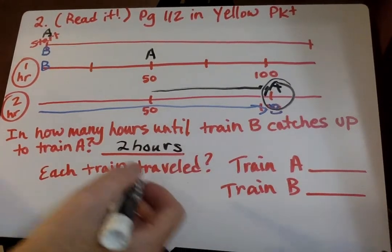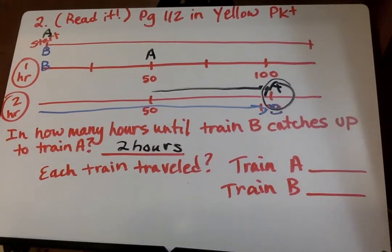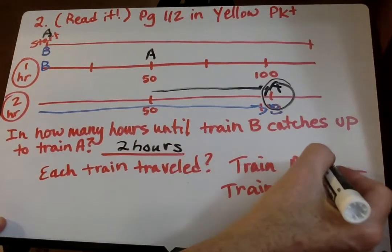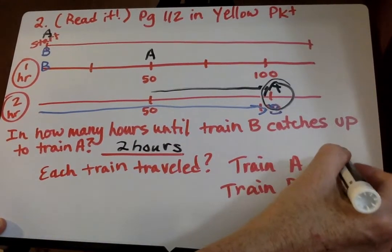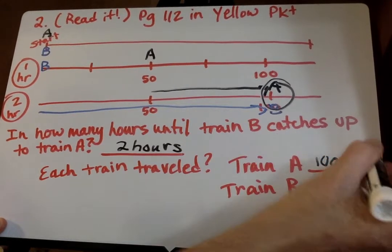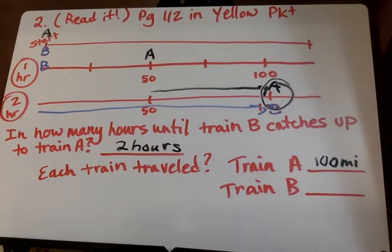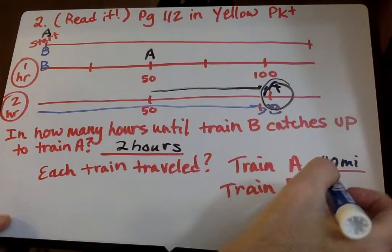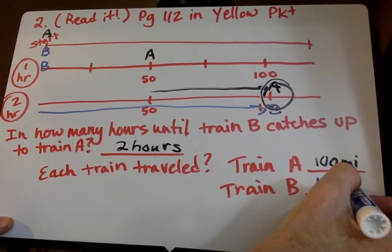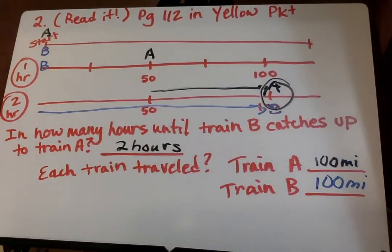How far had each train traveled at that time? Train A traveled 100 miles. And train B also traveled 100 miles. And it shows you algebraically how to do that problem on 112.